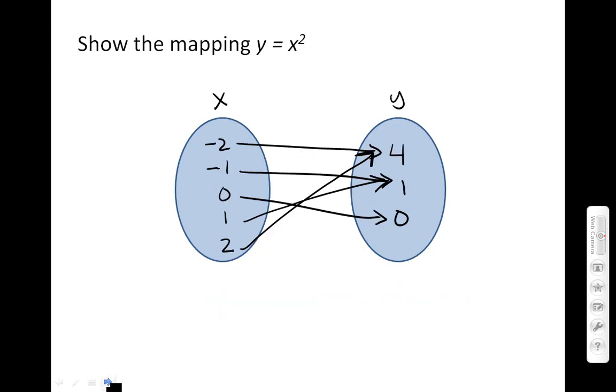Is the mapping y equals x squared considered a one-to-one mapping? No, this is not considered a one-to-one mapping.